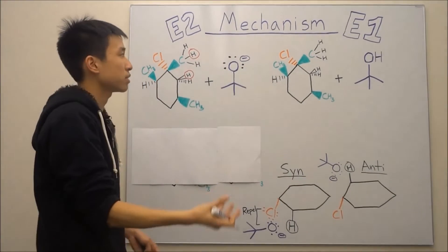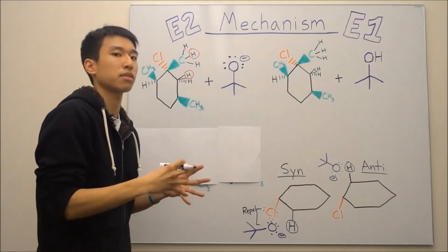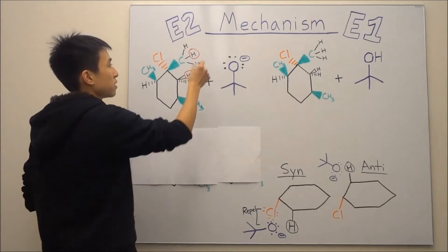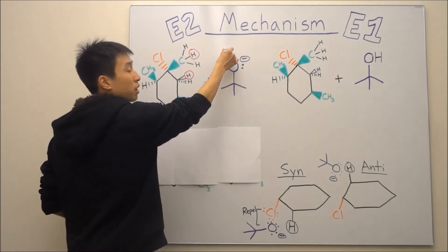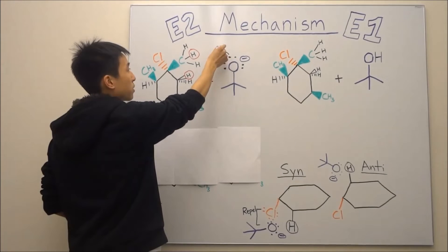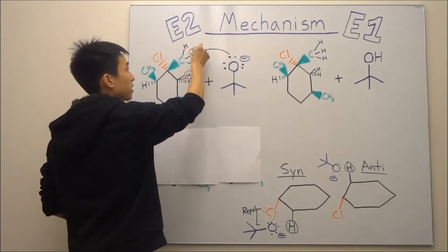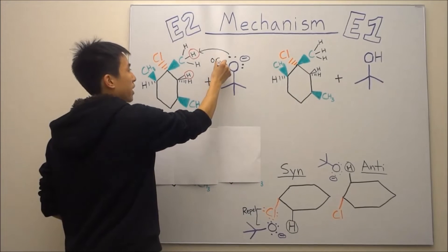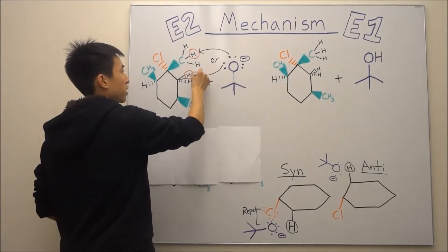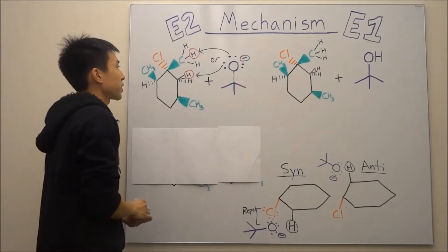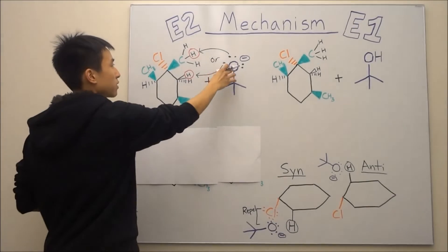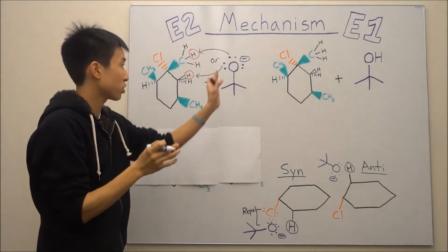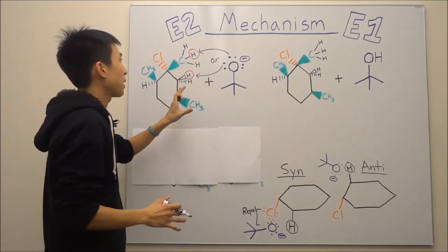It has a negative charge and wants to find something positive to make itself neutral. So you start your arrows from the base and attack this hydrogen that's anti, or you attack this other hydrogen that's also anti. Now that your base has gotten a hydrogen — also known as a proton — to fix its charge, it's going to be happy.